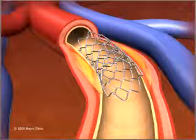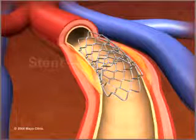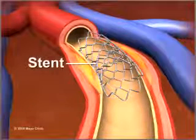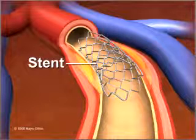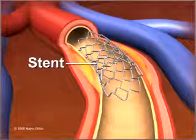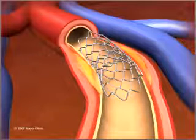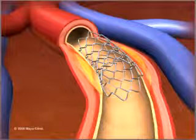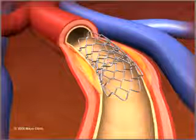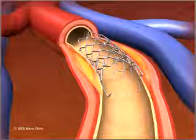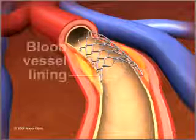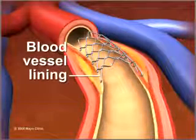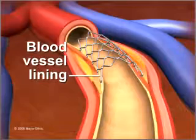About 70 to 90 percent of coronary angioplasty includes placement of a stent, a wire mesh tube that holds open weakened arteries. The stent may prevent re-narrowing after an artery is widened, and it stays in place permanently as the blood vessel lining heals over it.